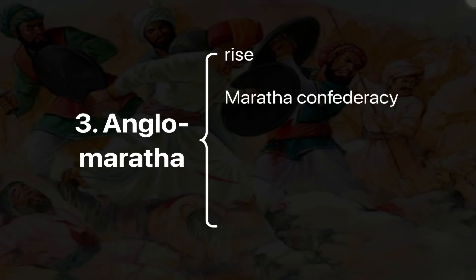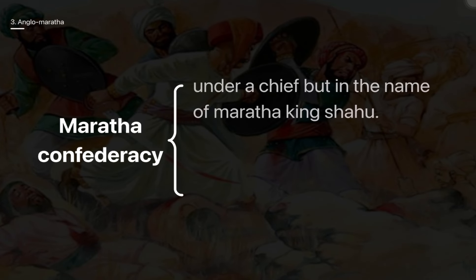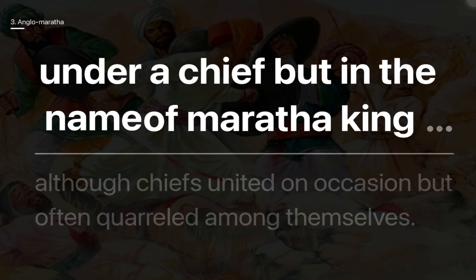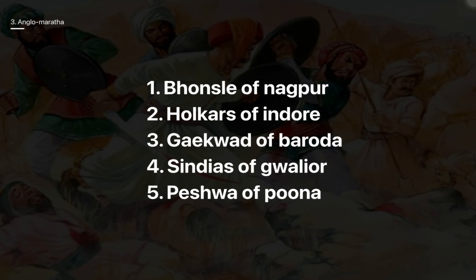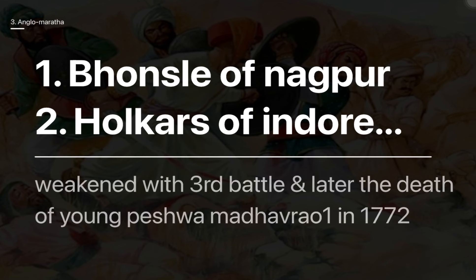The Maratha Confederacy operated under chiefs but in the name of the Maratha King Shahu. Although the chiefs united on occasions, they often quarrelled among themselves. These chiefs included the Bhosle of Nagpur, Holkars of Indore, Gaikwad of Baroda, Sindhias of Gwalior, and the Peshwa of Pune. The Confederacy weakened with the Third Battle of Panipat.